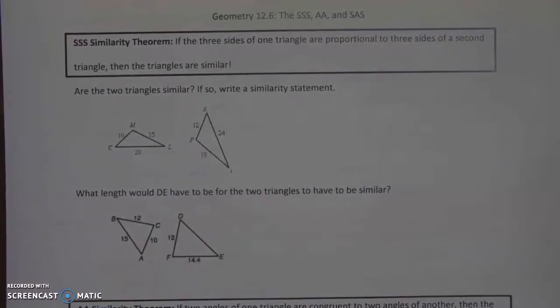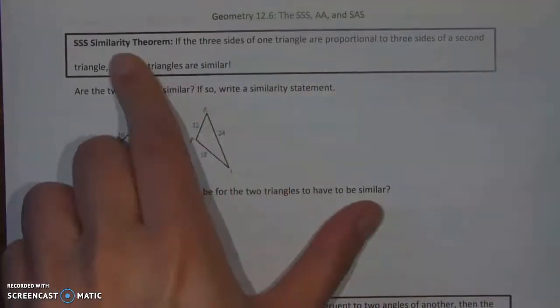You could have all congruent sides. You could have a congruent side followed by a congruent angle followed by a congruent side. And we went through all of these different theorems to see what would it take to know if they were congruent. Well we're going to do something similar to that only instead of wondering if triangles are congruent we're going to check to see whether or not they are similar.